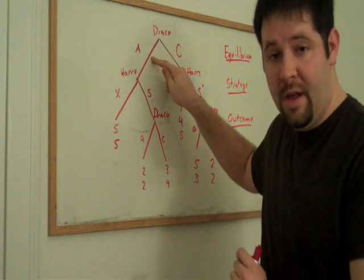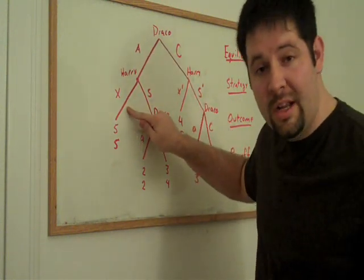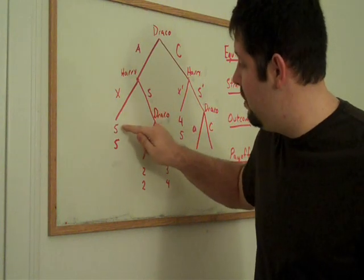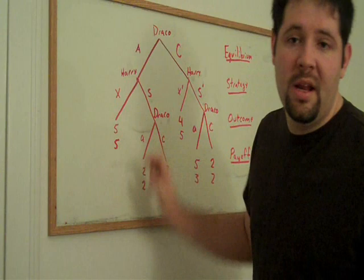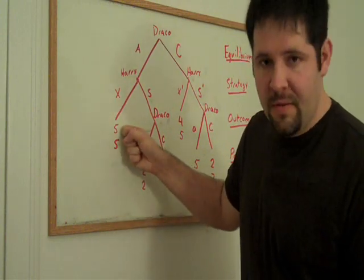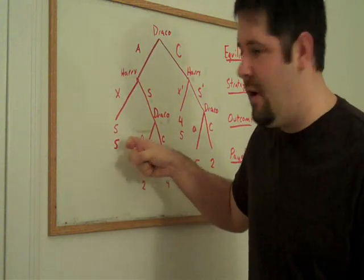To take a concrete example within this game, Draco, if Draco casts spell A and then subsequently Harry casts spell X, both players would receive the payoff of five. The way I've written this, Draco receives the first five and Harry receives the second five.